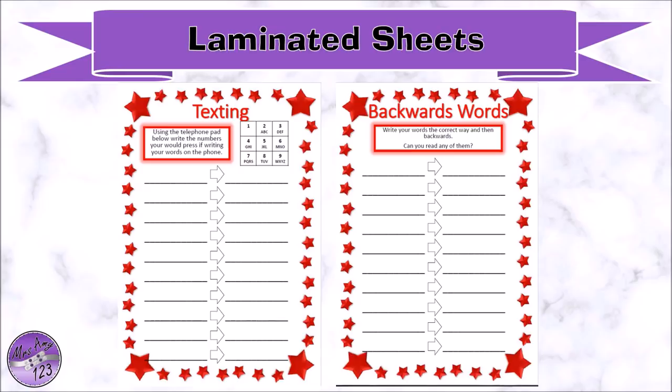You can also laminate templates for kids to write on with whiteboard markers or use sheet protectors. One template is 'texting' — using old mobile phone number codes where you'd press a button multiple times for specific letters, so kids write the code for each word. For backwards words, I always want kids to write the word correctly first before writing it backwards or jumbled.